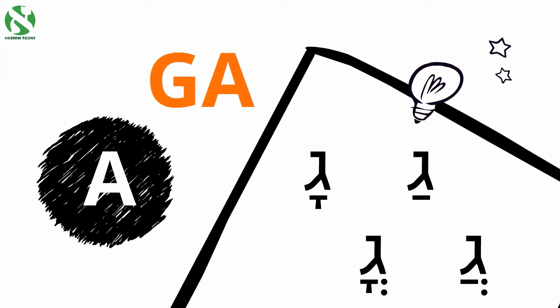By the way, these different symbols of Nikud each have a name. This is a Patach. This is a Kamatz. And these are the Hataf Patach and Hataf Kamatz.